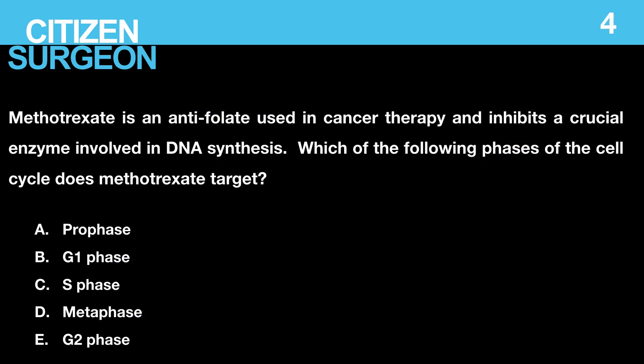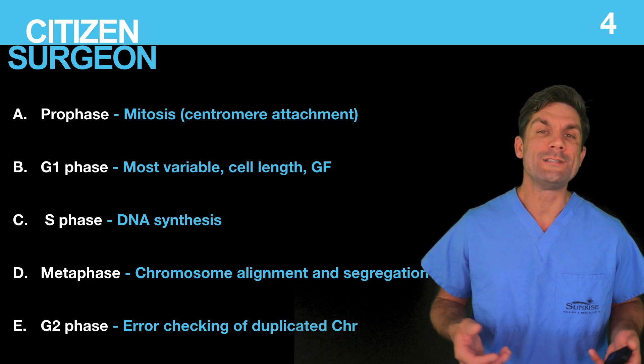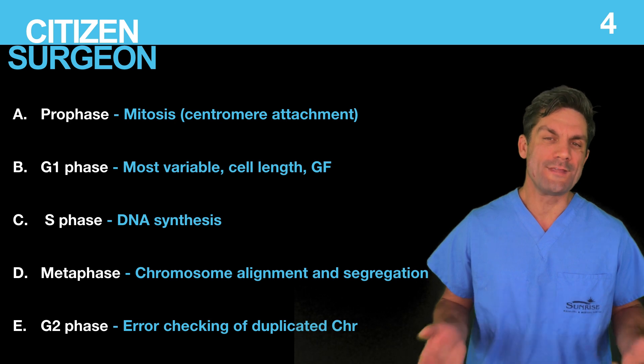Question four: methotrexate is an antifolate used in cancer therapy and inhibits a crucial enzyme involved in DNA synthesis. Which phase of the cell cycle does methotrexate target — prophase, G1 phase, S phase, metaphase, or G2 phase? The correct answer is C, the S phase, or the synthesis phase. Prophase is in mitosis — that's where you get centromere alignment. The G1 phase is the most variable and is where the cell lengthens; growth factors are important here. The S phase is where DNA synthesis occurs.